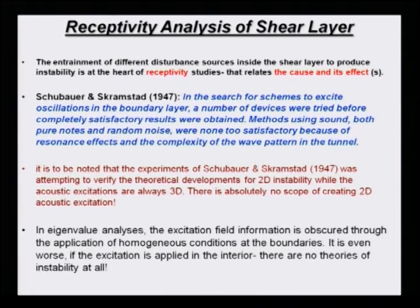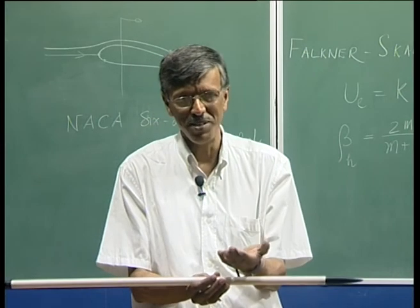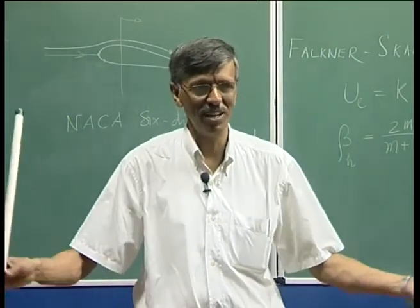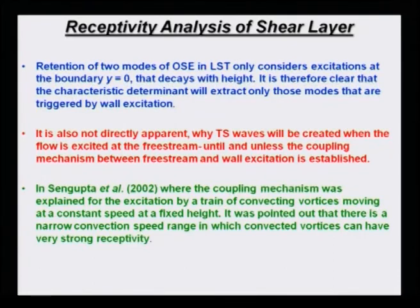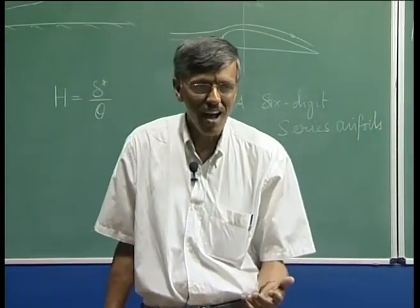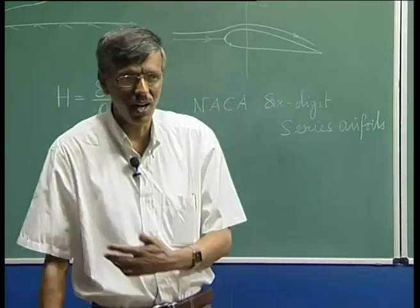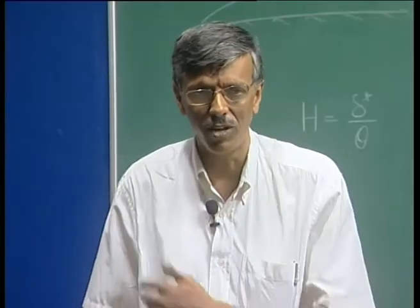Their experiment was geared towards validating a 2D instability, while acoustic excitations are all 3D - there is absolutely no scope of creating 2D acoustic excitation. In eigenvalue analysis, the excitation field information is completely lost because of our insistence upon satisfying homogeneous boundary conditions. It is even worse if the excitation is applied in the interior - there are no theories of instability for that. This was the situation till the mid 80s or so, then some of us tried to rectify the situation. When we write only two modes in linear stability theory, we are actually considering excitation at the boundary y equal to 0, which decays with y - that is what we call the wall mode. We will start from here in the next class and develop a theory of receptivity to find out lot more meaningful information than what is given by eigenvalue theory.